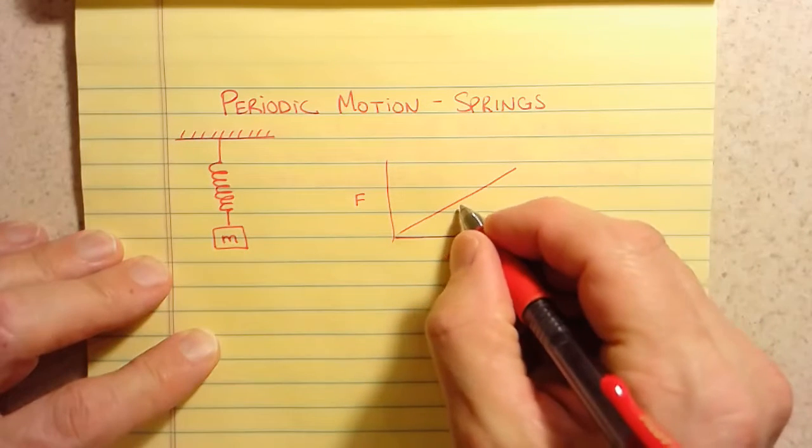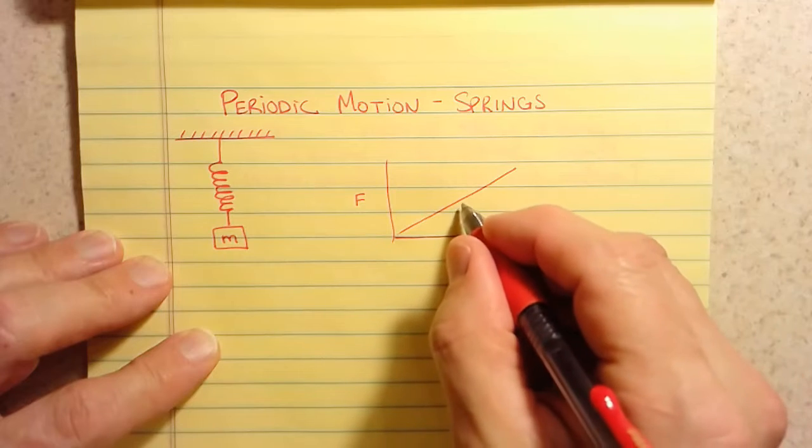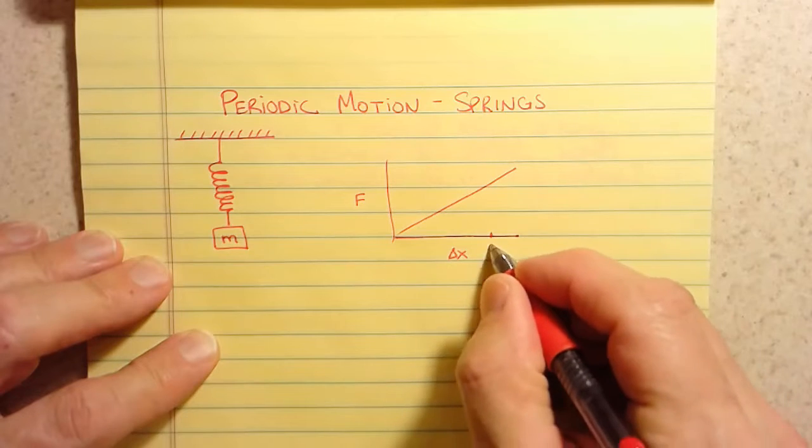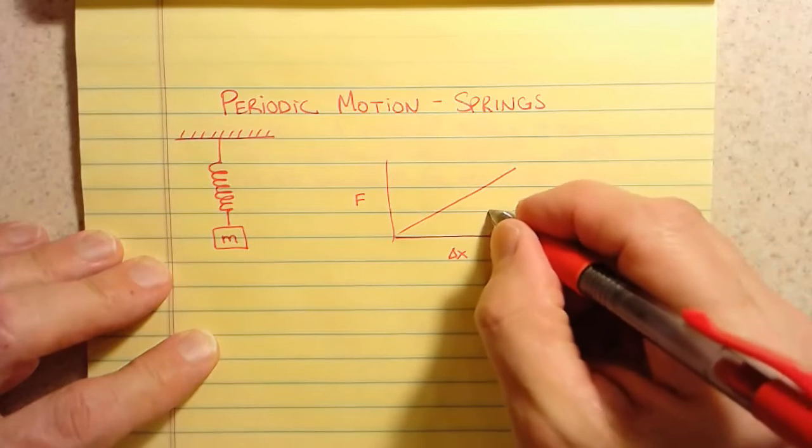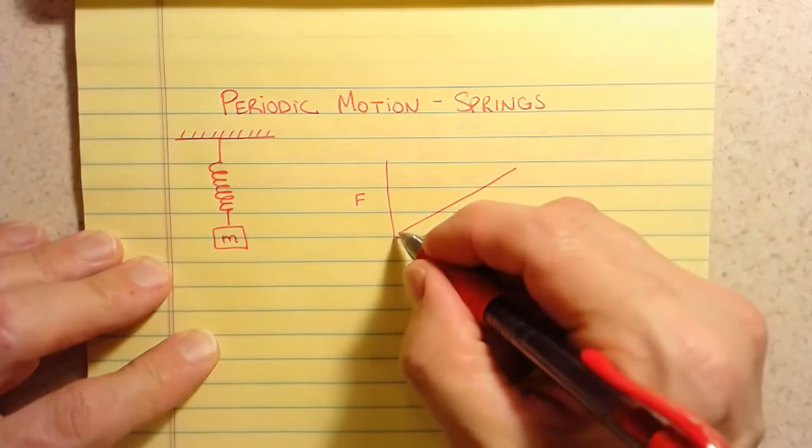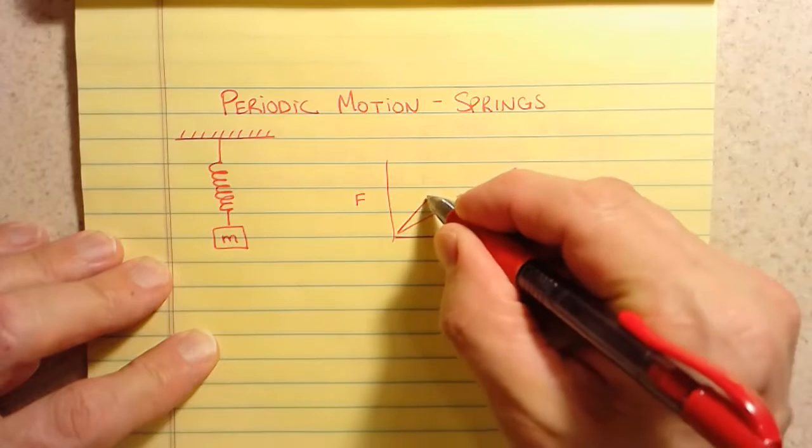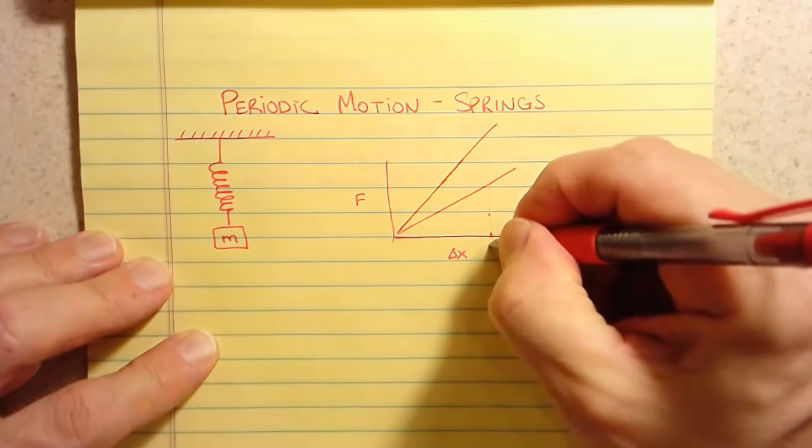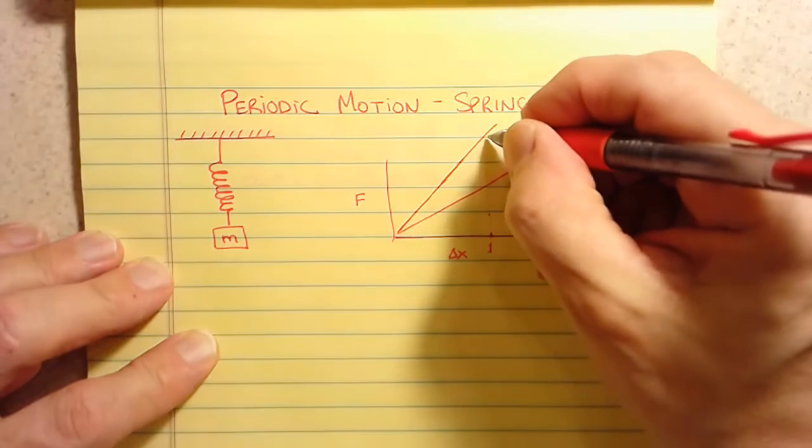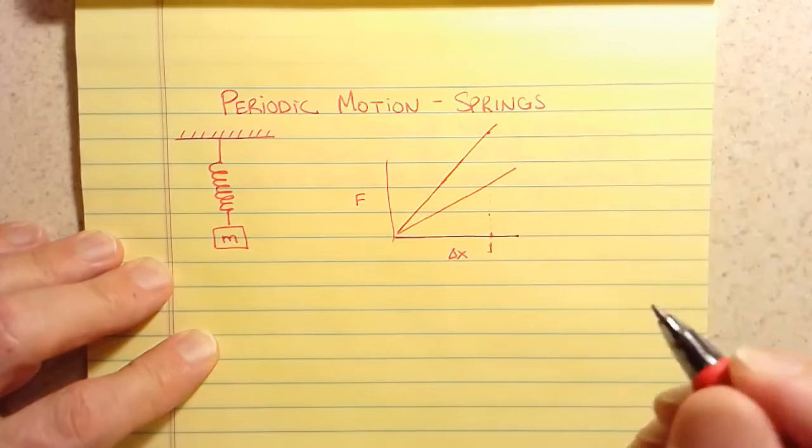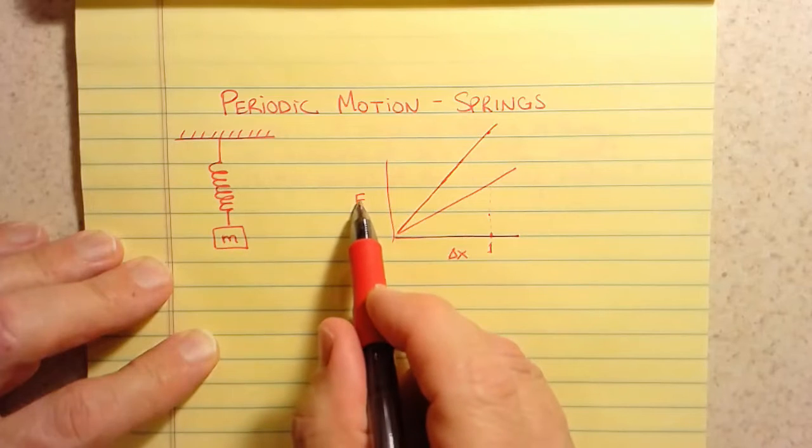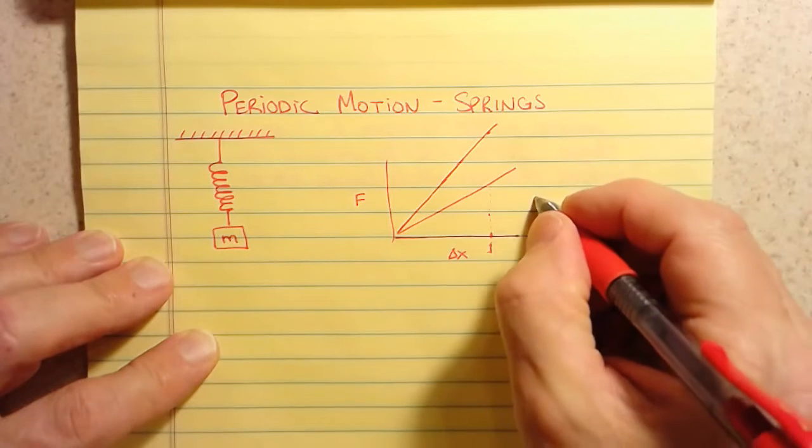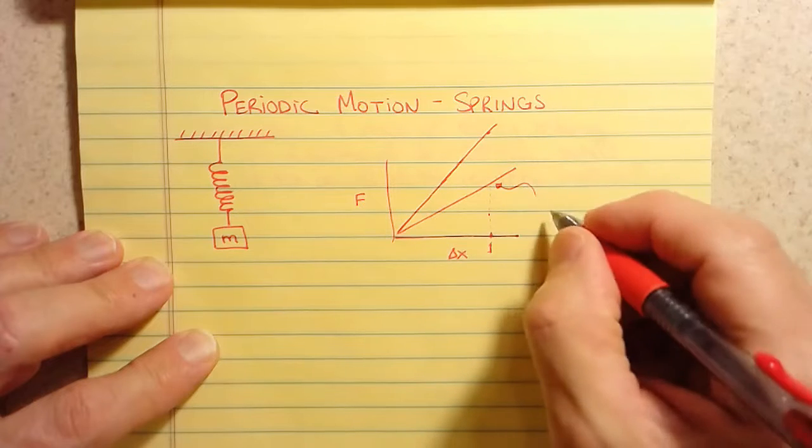So this slope here is basically a measure of how strong the spring is. So let's just imagine we stretch our spring exactly one meter, and that takes a certain amount of force. If I had a different spring that was stiffer, the graph might look like this, meaning that to stretch it one meter, we would have to apply a much bigger force. And so there's a relationship between how much force you apply on a spring and how much it stretches. And the slope of this line here is what we call the spring constant.